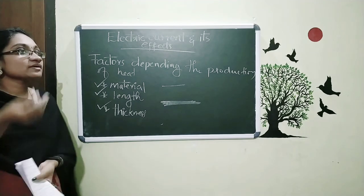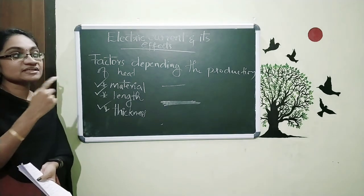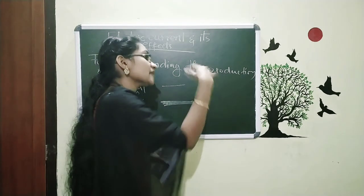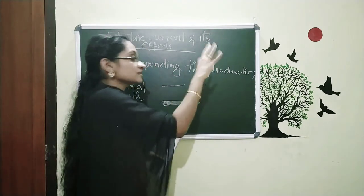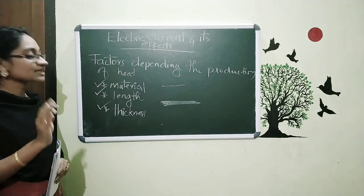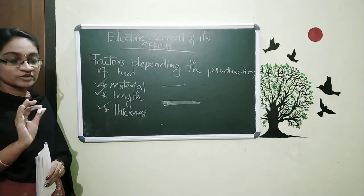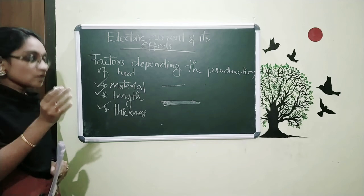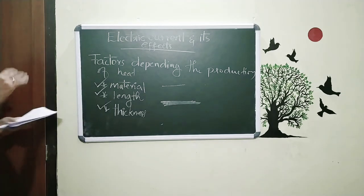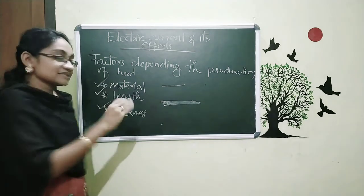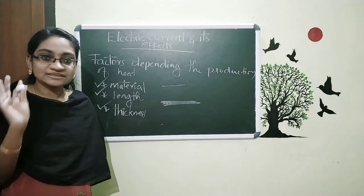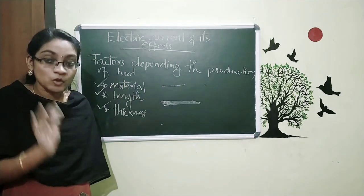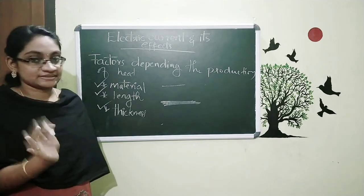Normally, we use certain wires in circuits in our homes — connecting bulbs and other devices. These wires generally do not produce a large amount of heat. So for certain wires, they can produce heat, and for certain wires they cannot. For different purposes, we use the proper type of metals.